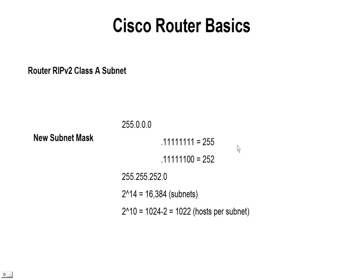This would be used for a good-sized company or maybe a school district that has hundreds of schools within it where they need a Class A, but they would use the private IP as their addressing scheme rather than a public address. They would then use NAT or PAT to share those with an Internet provider IP address.